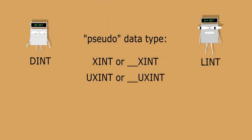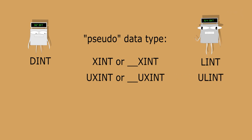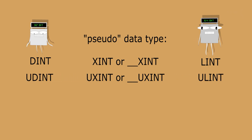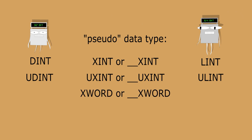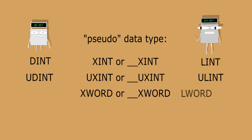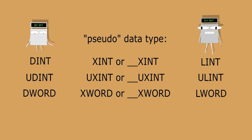Next there is the USINT. It is converted to a ULINT on 64-bit platforms and to a UDINT on 32-bit platforms. The XWORD gets converted to an LWORD on 64-bit platforms and to a DWORD on 32-bit platforms.